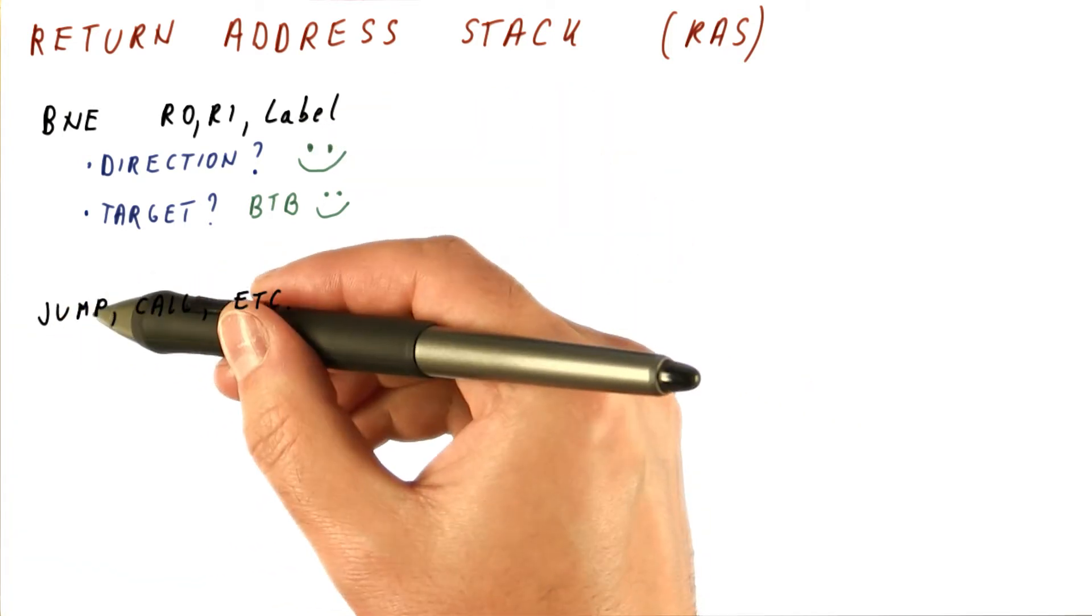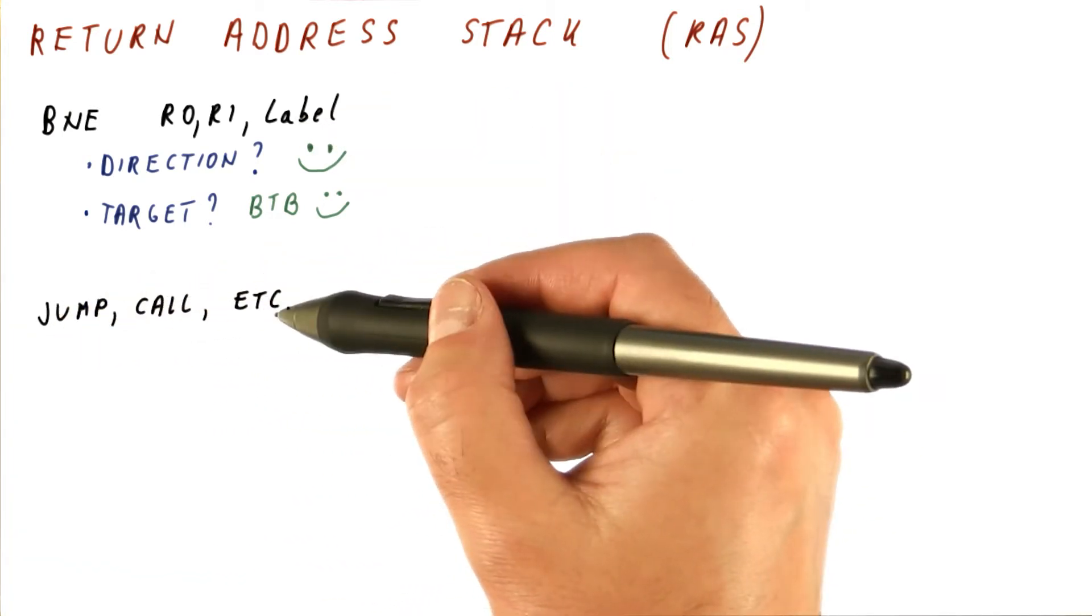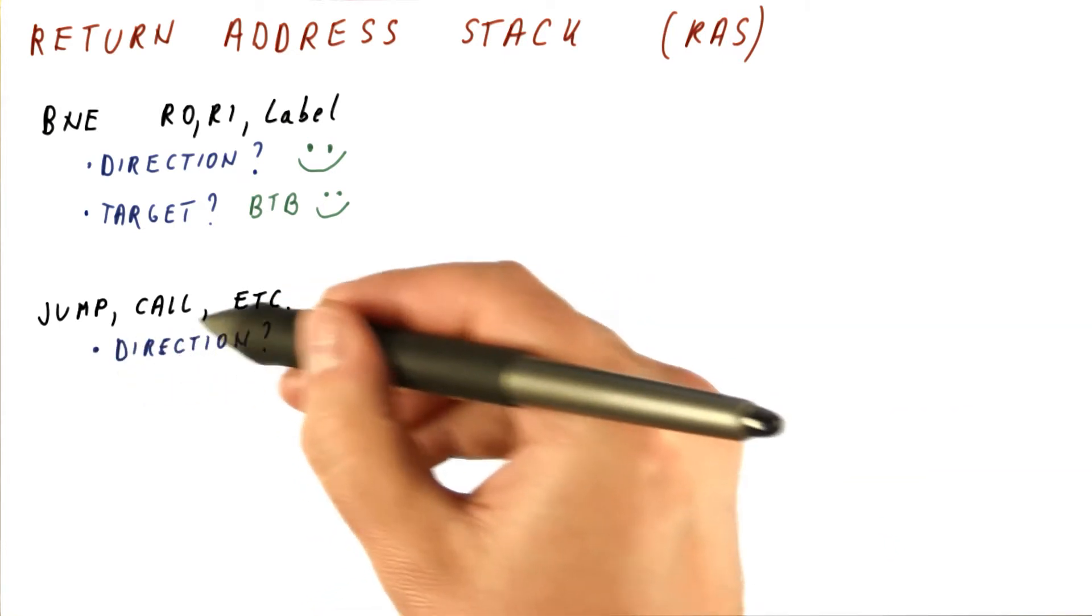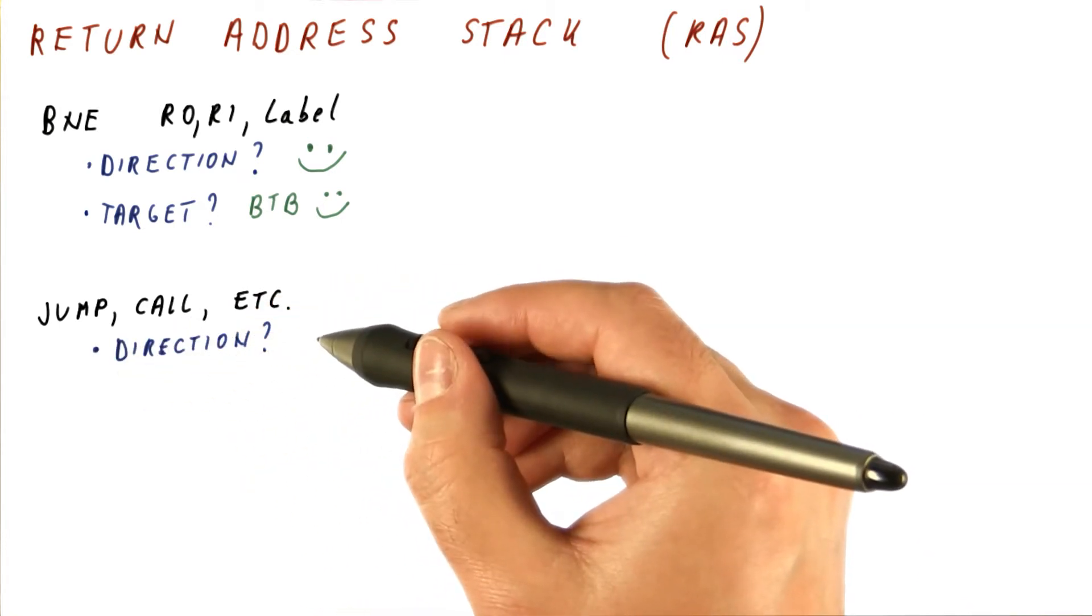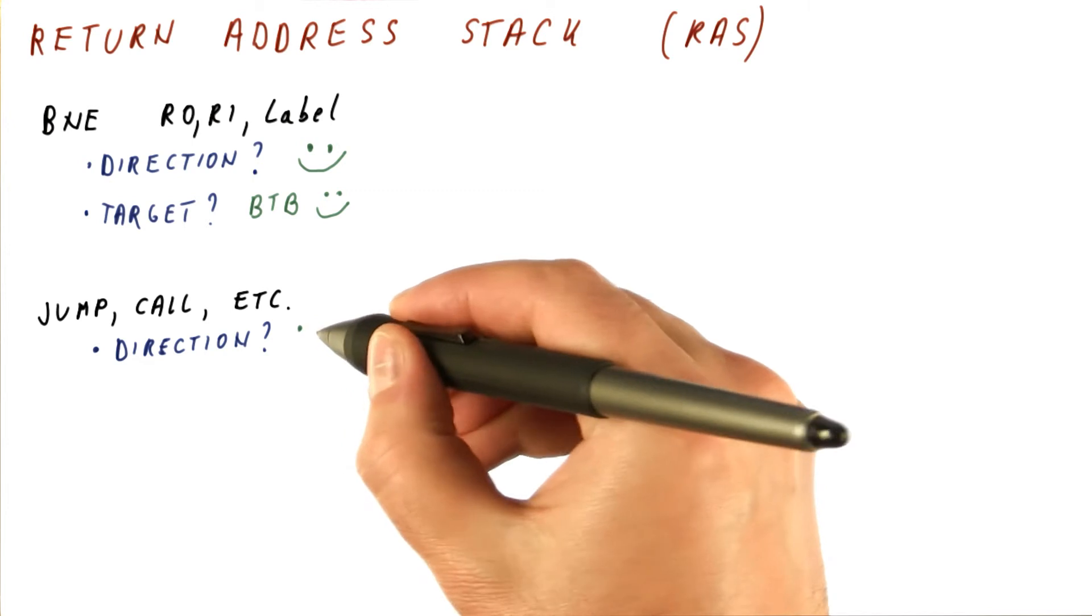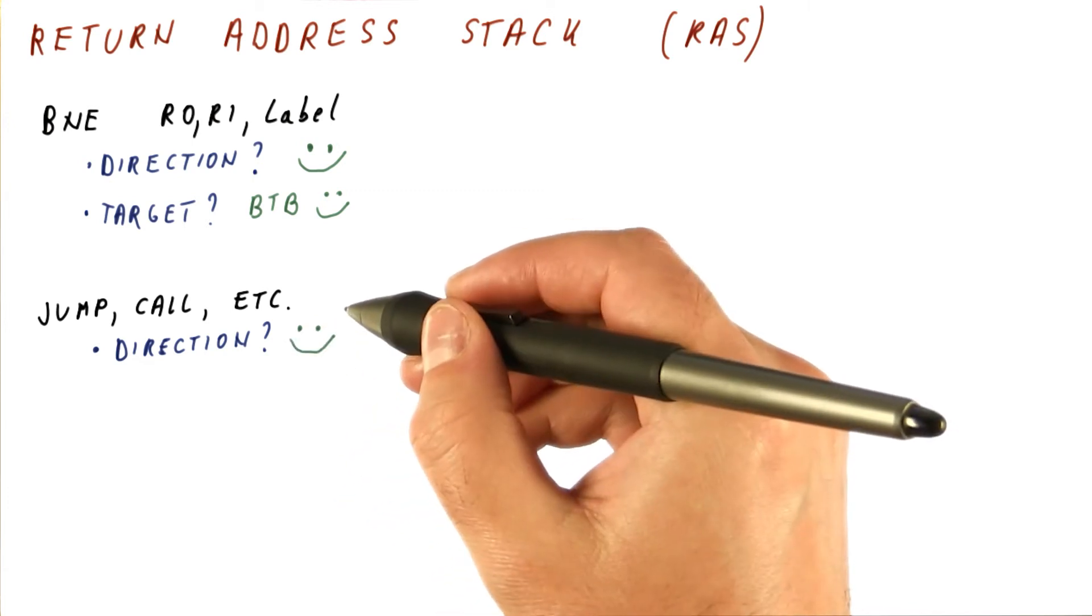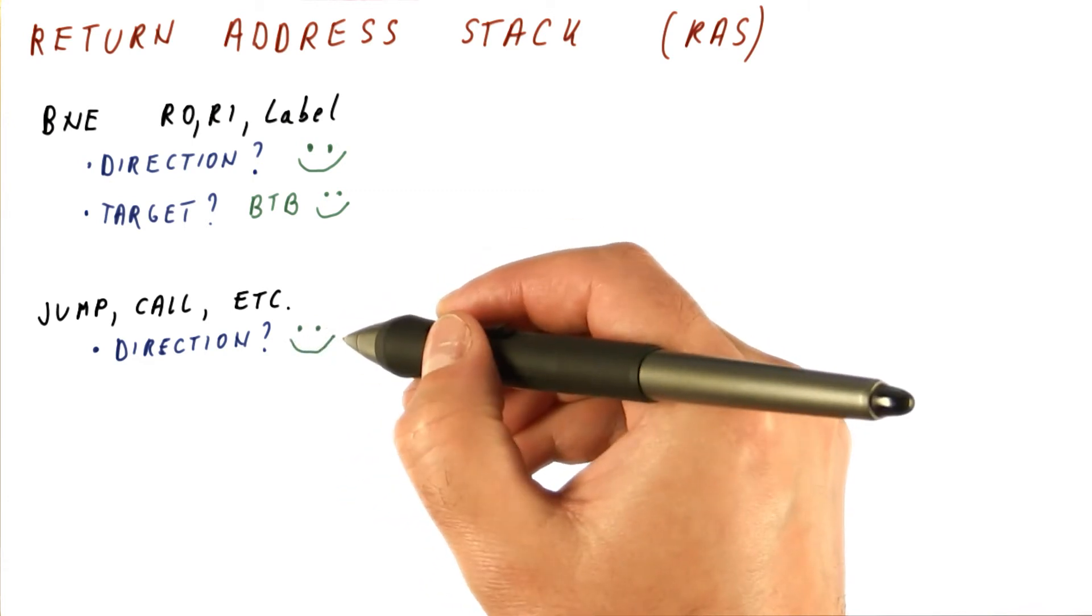Another type of branches are unconditional jumps, function calls, etc. As far as their direction is concerned, it's trivial, they are always taken. So even the simplest predictor of the direction predictor type will do well on these.